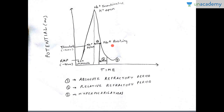Once the sodium channel returns to a resting state, a stimulus can open it again. However, during the relative refractory period the sodium channel is resting but the membrane potential has not yet returned to normal. You cannot take the sodium channel directly from inactivated to activated — it must first pass through the resting state. It only reaches the resting state at the end of the absolute refractory period.